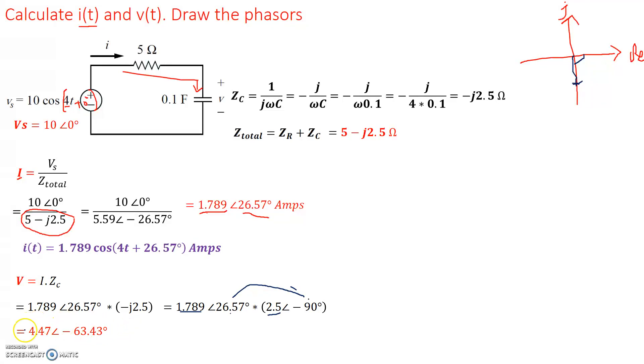Now going from voltage in phasor domain to voltage in time domain, here is the magnitude right here of 4.47. So we get v(t) is equal to 4.47 cosine(4t - 63.43°) volts.